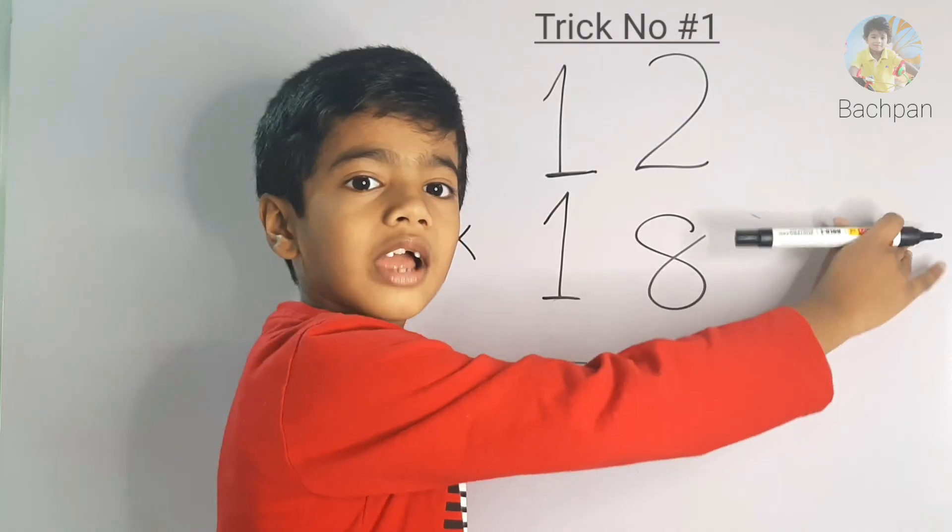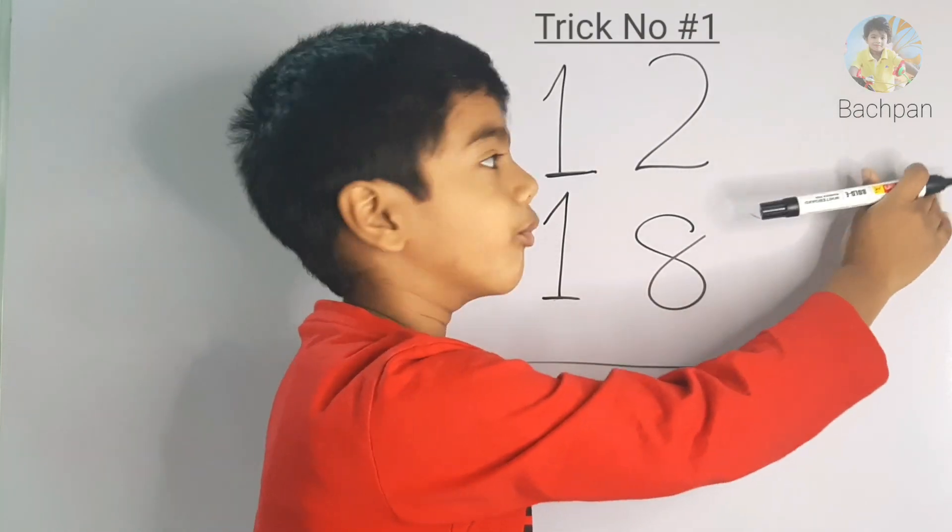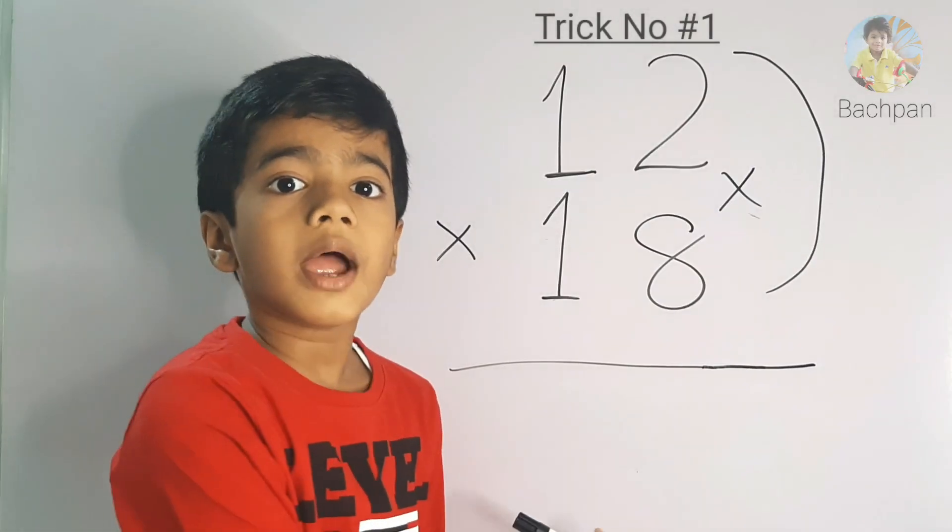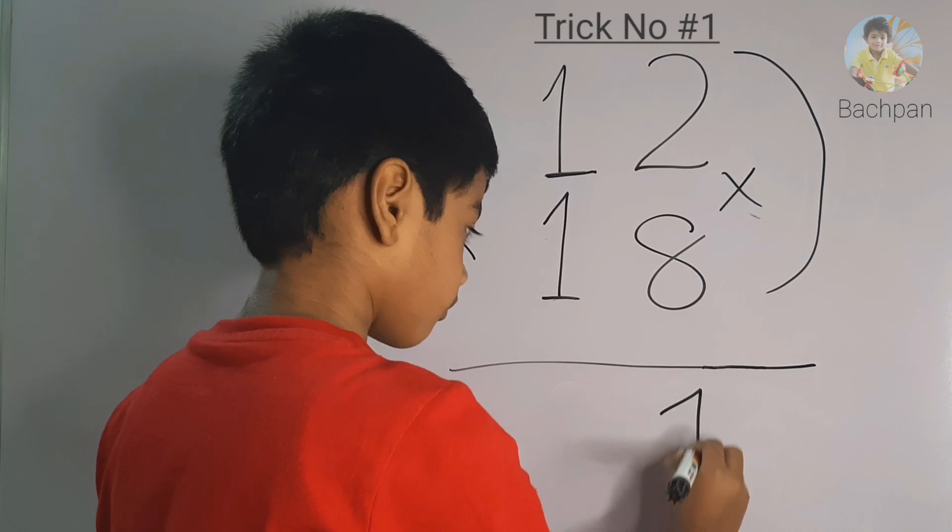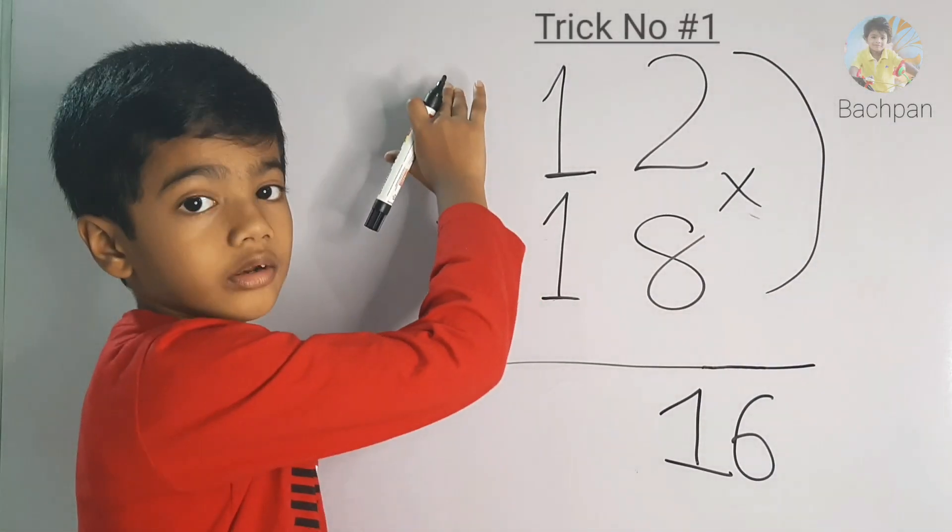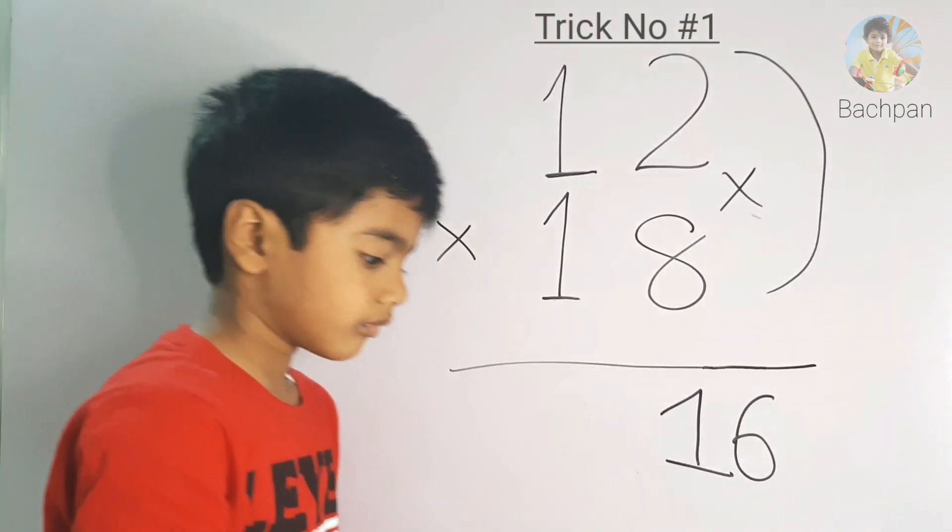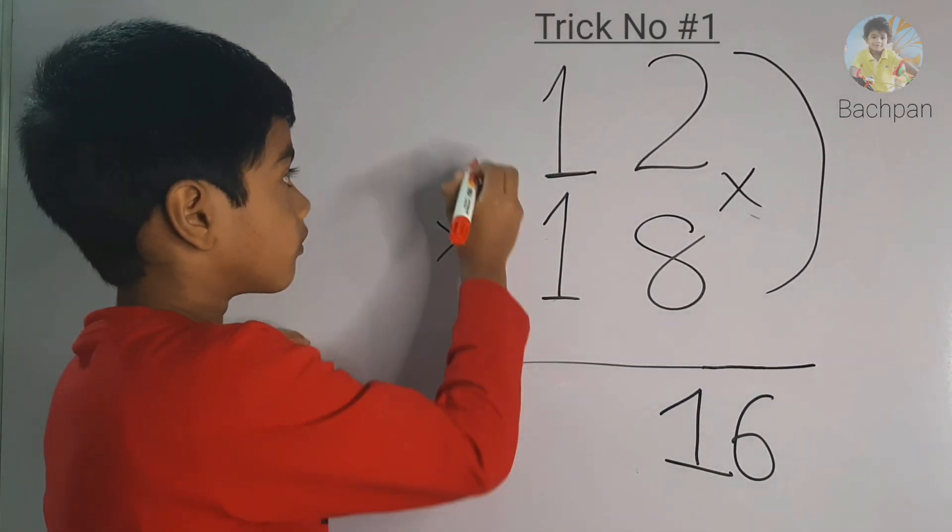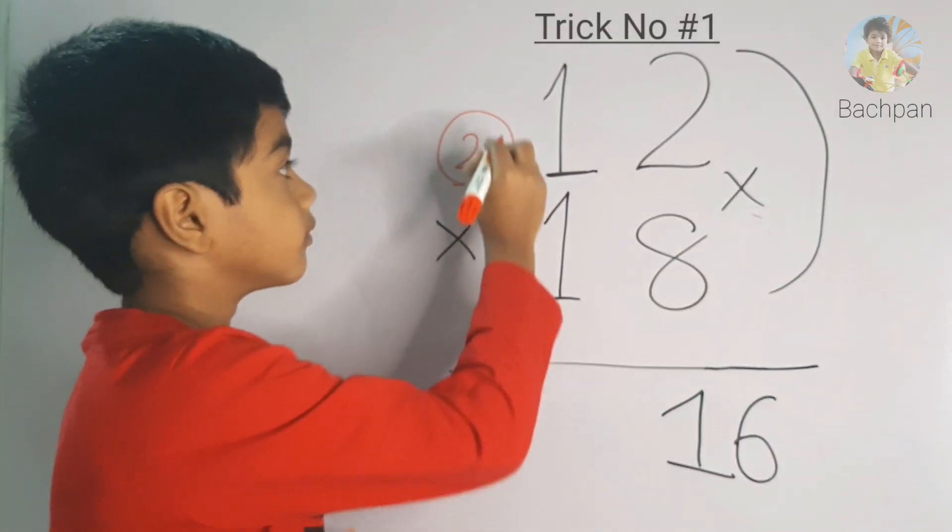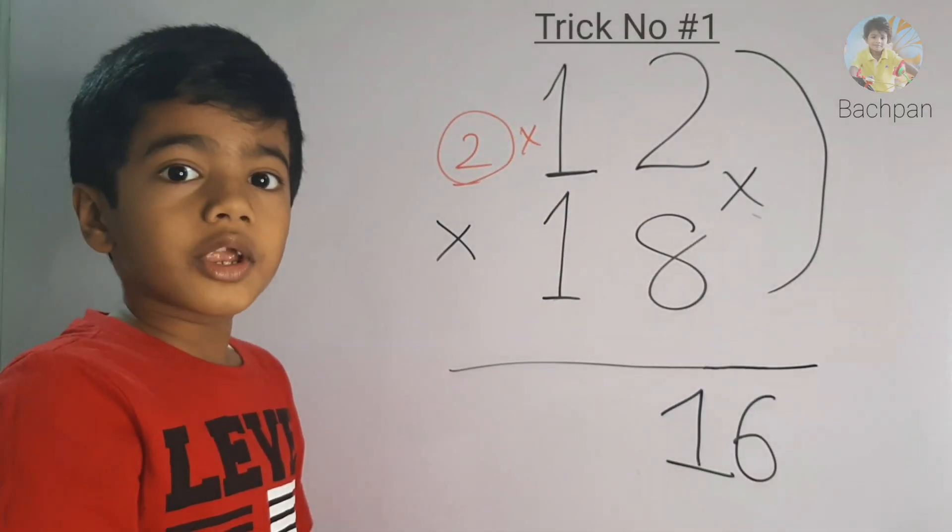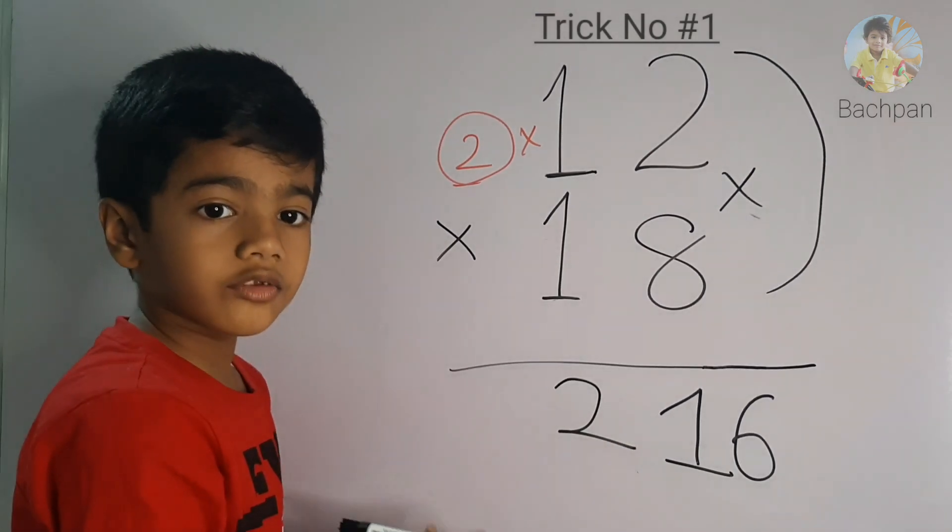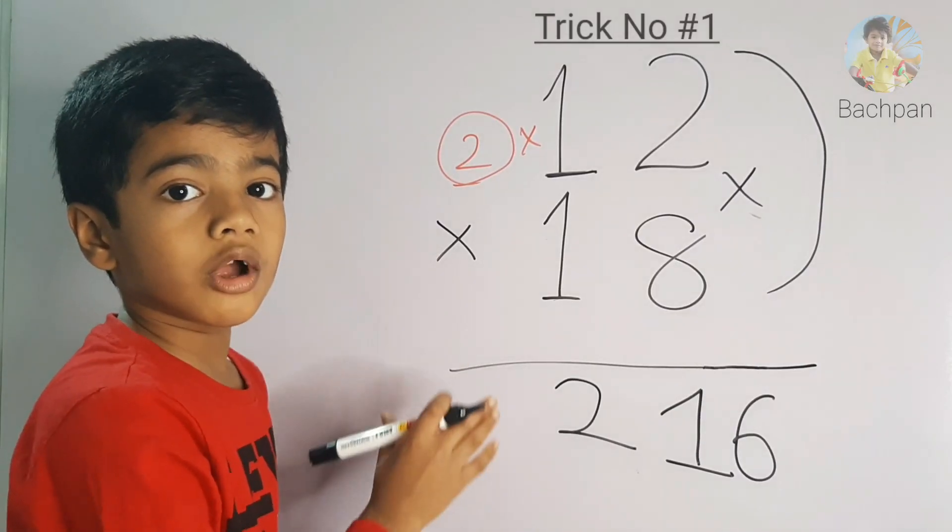Right side we have 8 and 2. Let's multiply 8 and 2. What is 8 times 2? 16. So write here 16. Left side we have 1. What is the next number of 1? 2. Let's multiply 2 into 1. What is 2 into 1? 2. So write here 2. So the answer is 216. 12 into 18, 216.